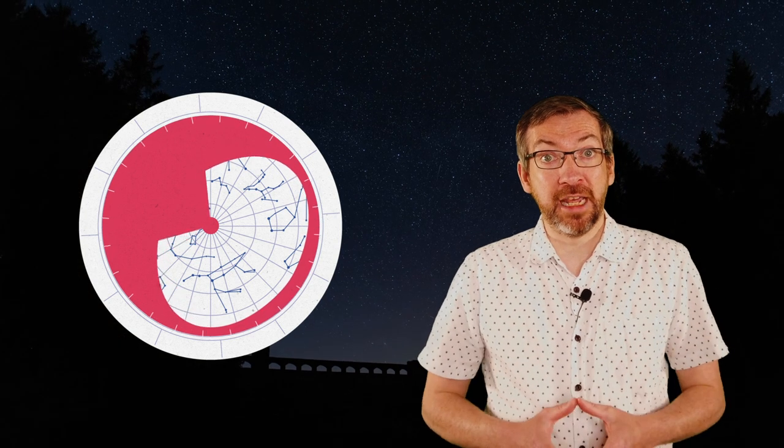Around the outside edge of the planisphere, you'll find dates and times. Just line those up for when you're stargazing, and the window will show you exactly what you can see. You can download and make your own planisphere using our Stargazing in Scotland pack.